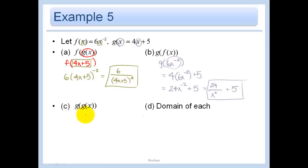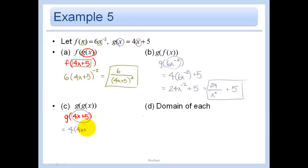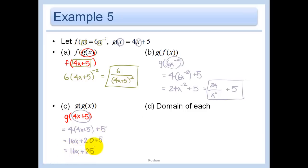This one says do g of g of x. g of x is 4x plus 5, so wherever I saw x, I put in 4x plus 5. I get 4 times (4x plus 5) plus 5. Distributing the 4: 16x plus 20 plus 5, which equals 16x plus 25.